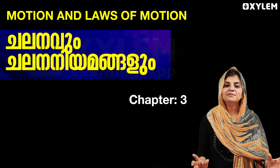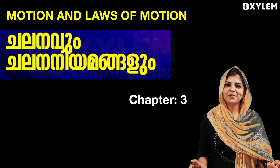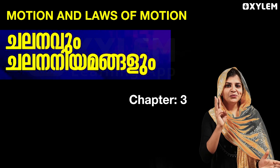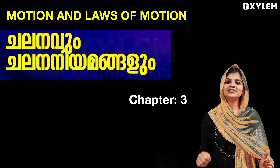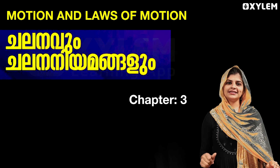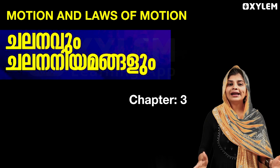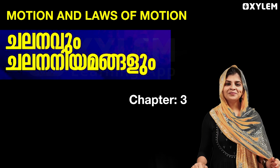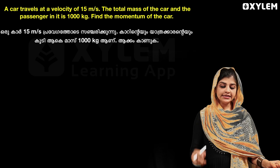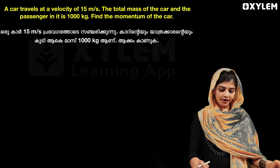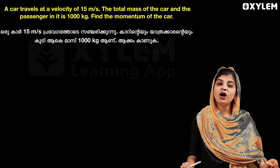There are 3 problems in this chapter — 3 important questions. We will discuss them. We are going to start with Newton's second law. This is the first question: A car travels with a velocity of 15 meters per second. The total mass of the car and the passenger in it is 1000 kg. Find the momentum of the car.